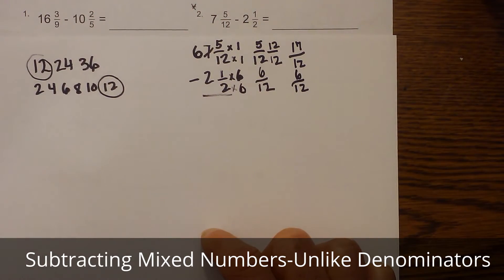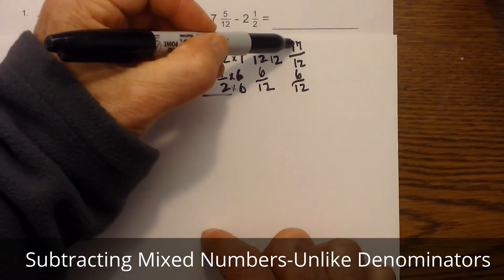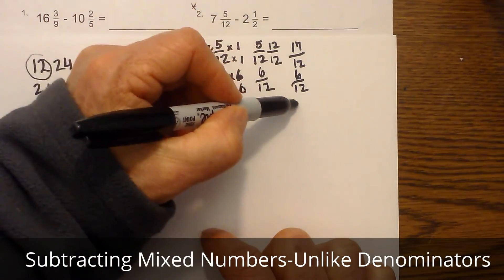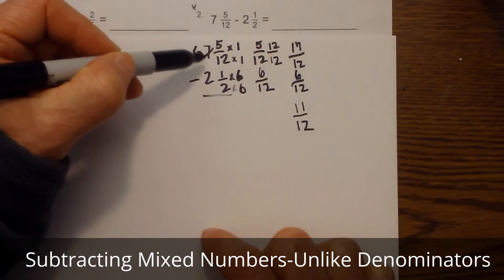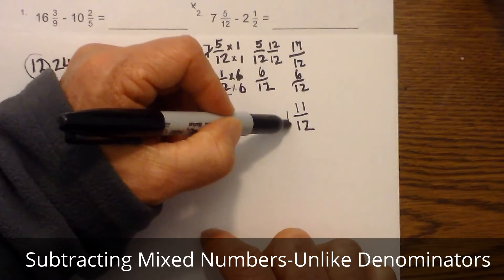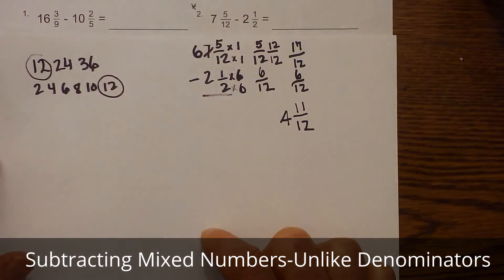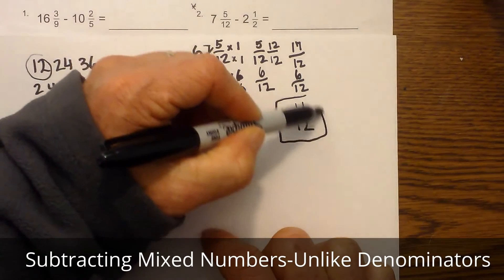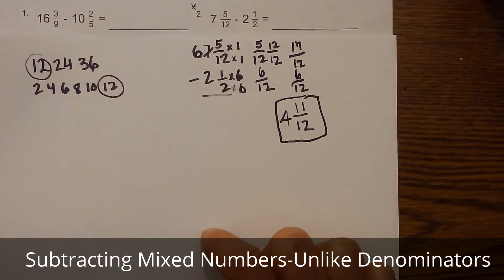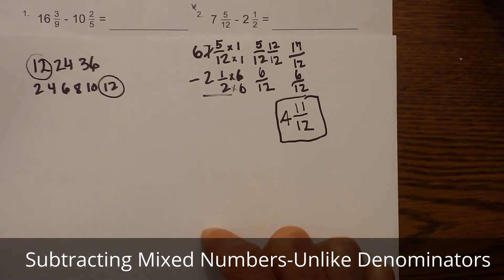Okay, so now I can just subtract. Seventeen minus six is eleven twelfths, and then six minus two is four, and so it becomes four and eleven twelfths because I cannot simplify this fraction anymore. Okay, not bad.